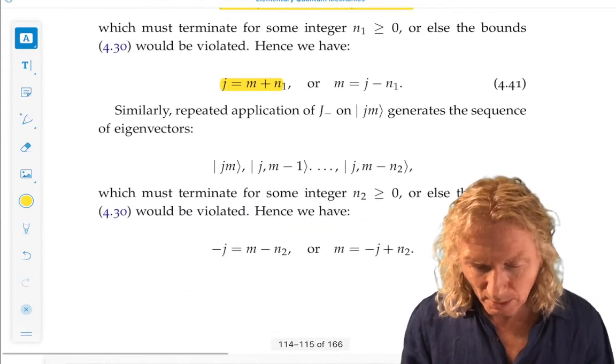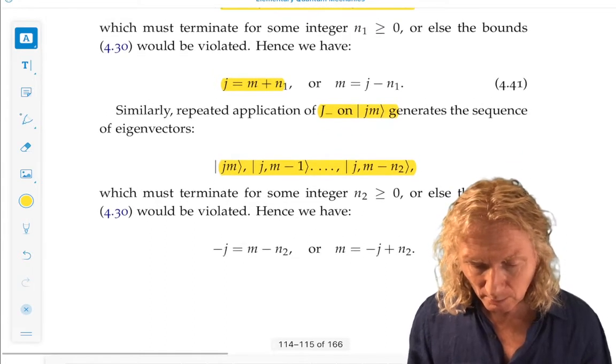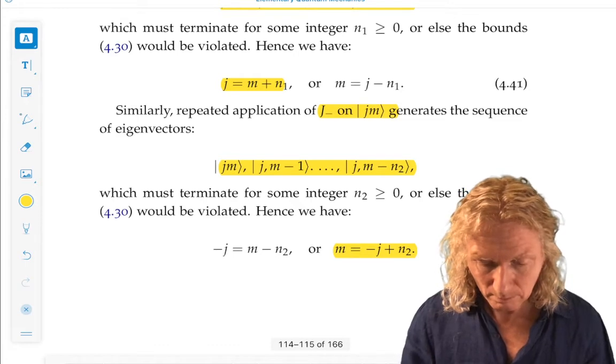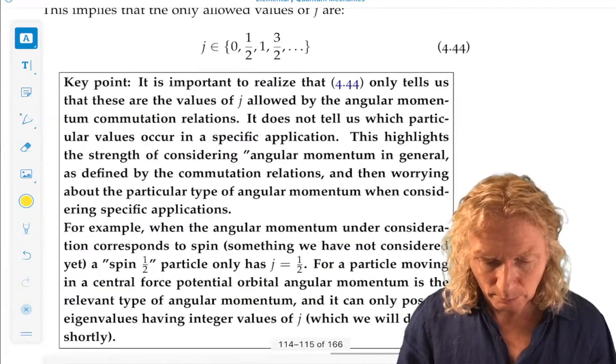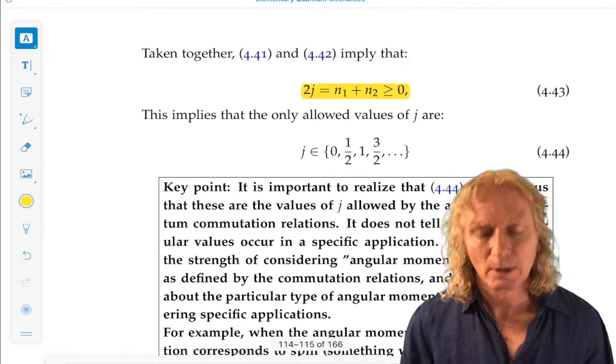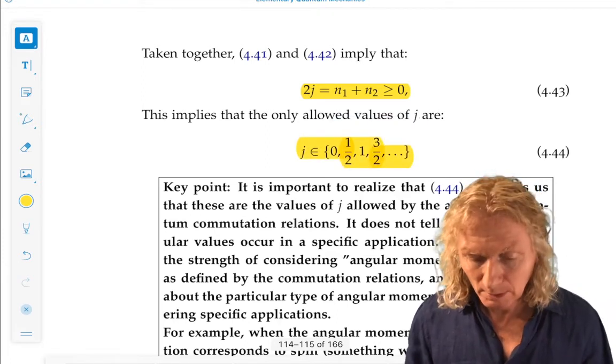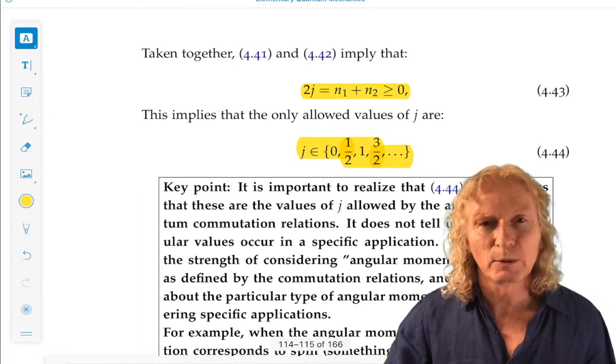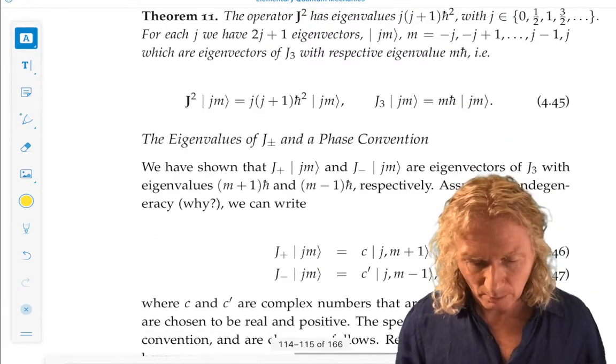We can let J minus act on J, M. We get a sequence of eigenvectors. And that terminates at M equals minus J plus an integer. And if we put those two conditions together, we see that 2J has to be a positive integer. So, the only values allowed for J, which is positive, are 0, 1 half, 1, 3 halves, and so on. Now, that's just what the commutation relations tell us.